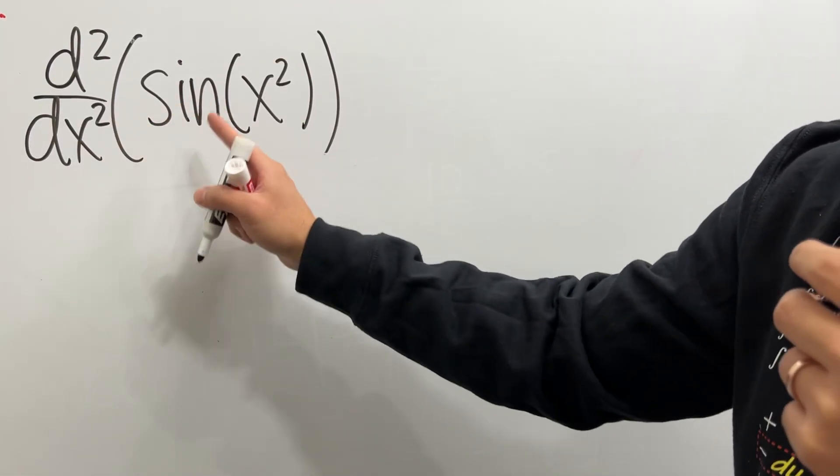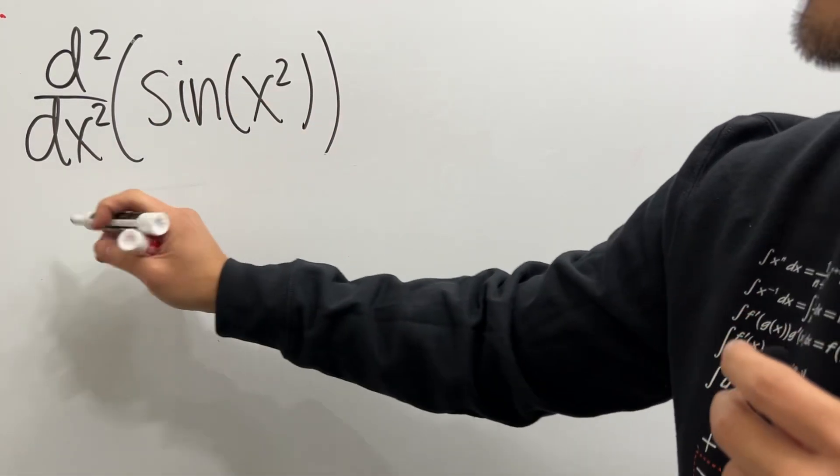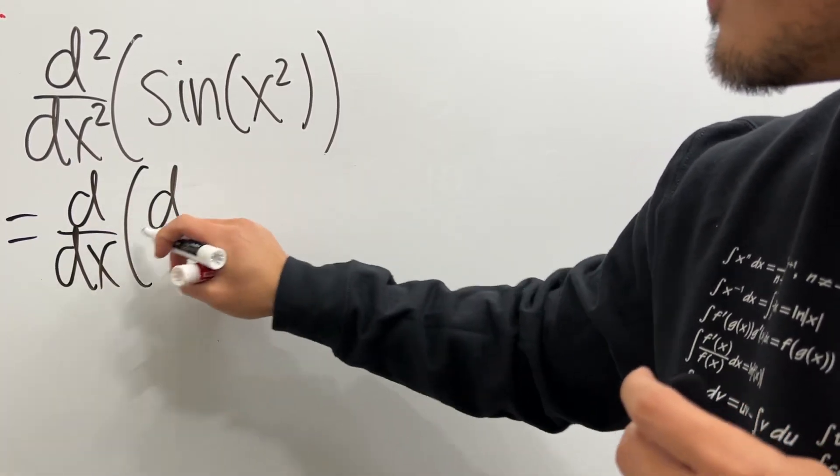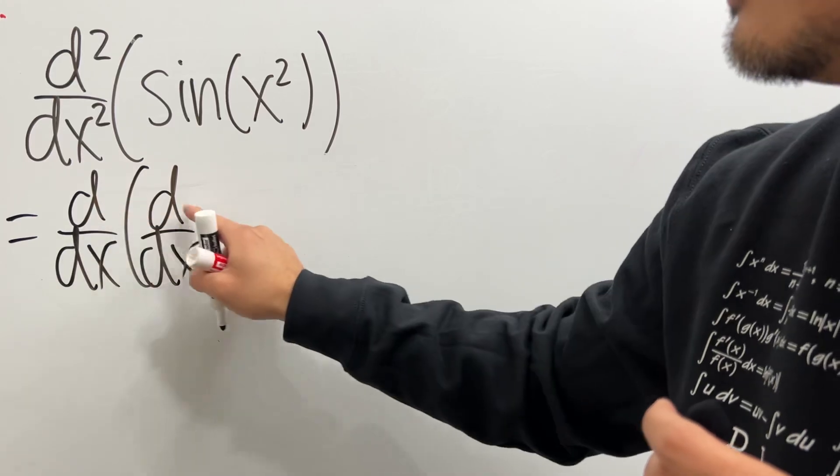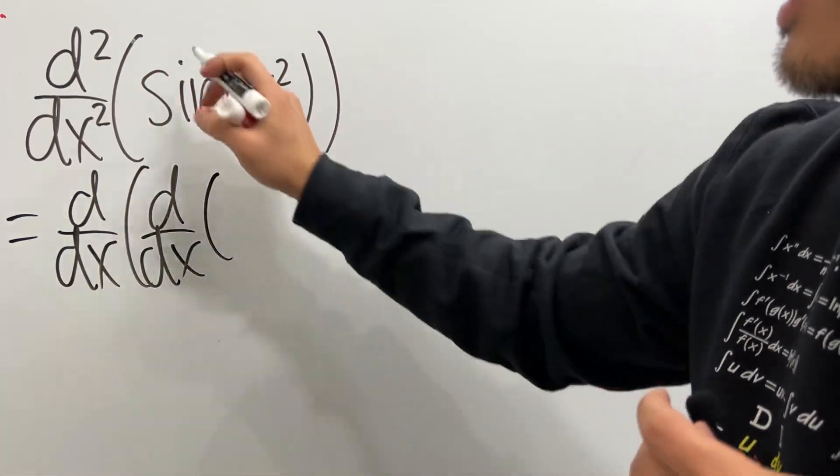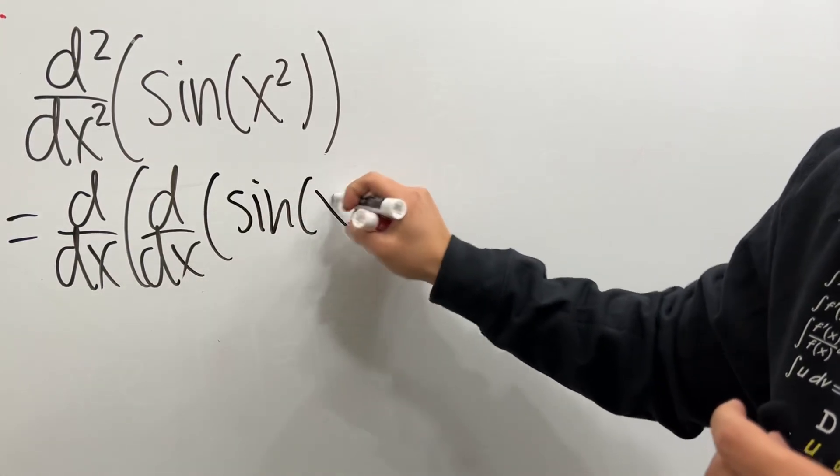How do we find the second derivative of sine of x squared? Check this out. First, we are going to differentiate of differentiate. That's why we have the d² on the top and the dx² on the bottom. And then the function is sine of x squared.